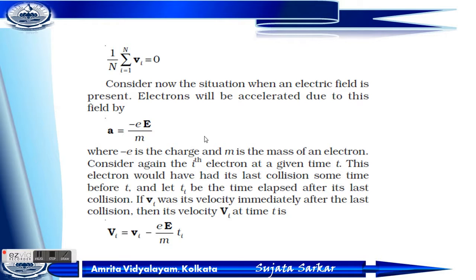Now, when we place electrons in an electric field, the electrons will be accelerated due to the field. So acceleration a equals minus e (charge of electron) times capital E (electric field) divided by m (mass of the electron), for the i-th electron at a given time t.